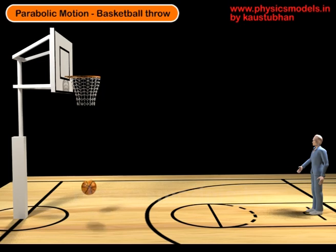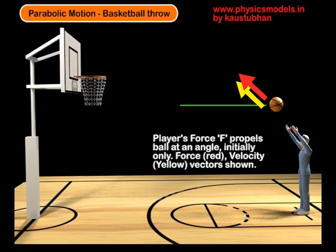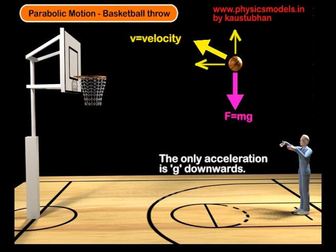After falling through the basket, the ball will bounce up and down till it comes to rest. The initial force applied by the player is shown by the red arrow acting at an angle. That causes an initial velocity vector — the yellow arrow — at an angle.